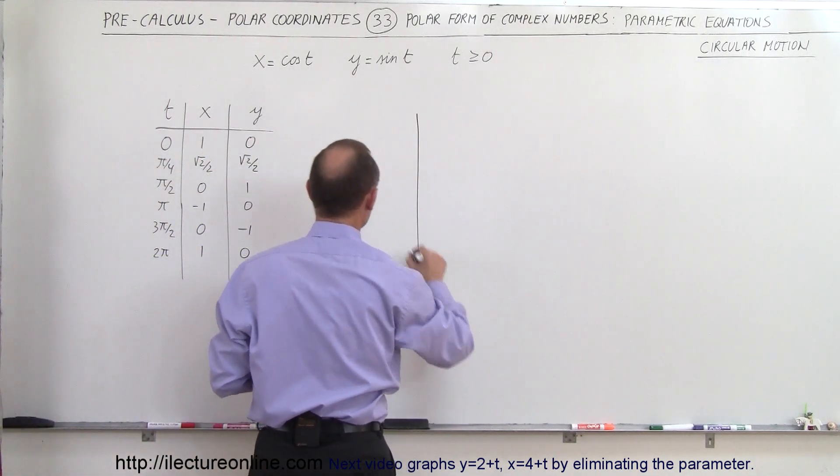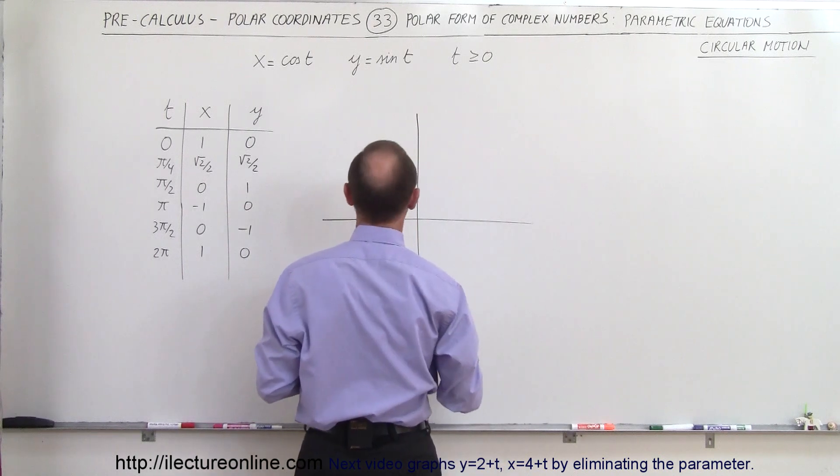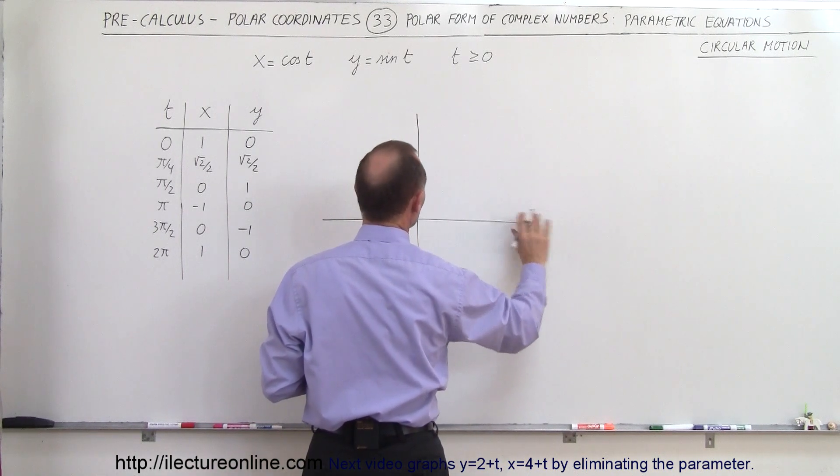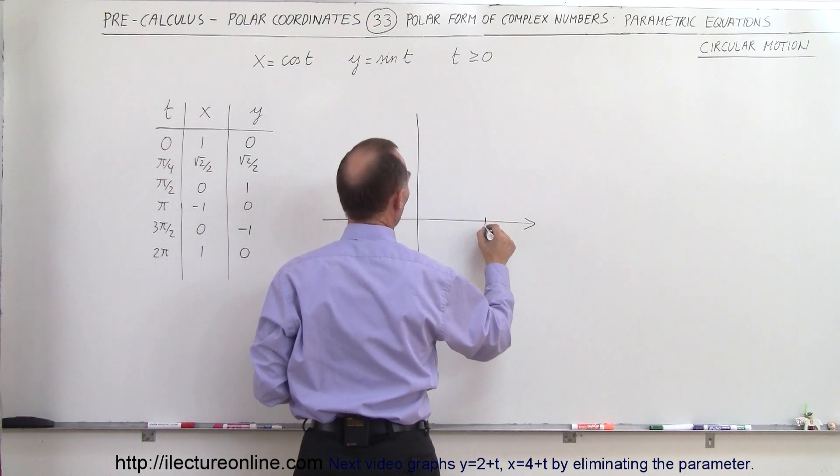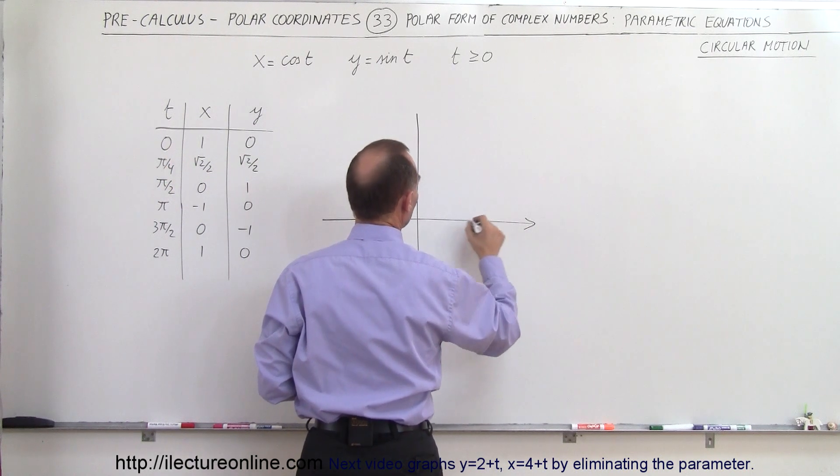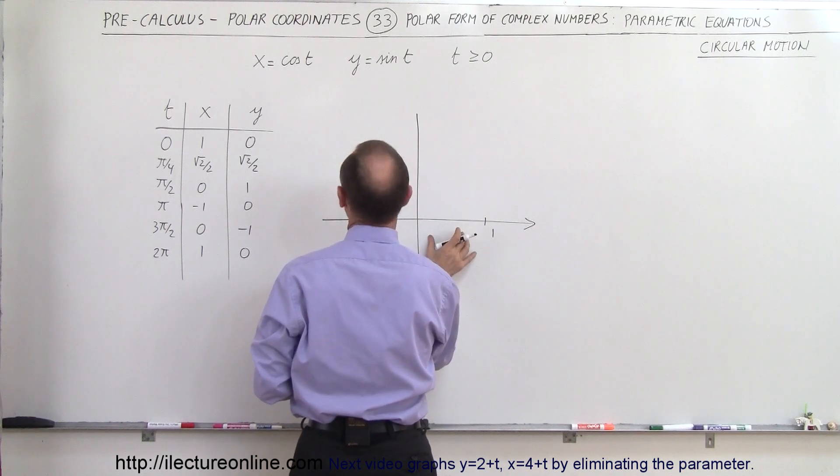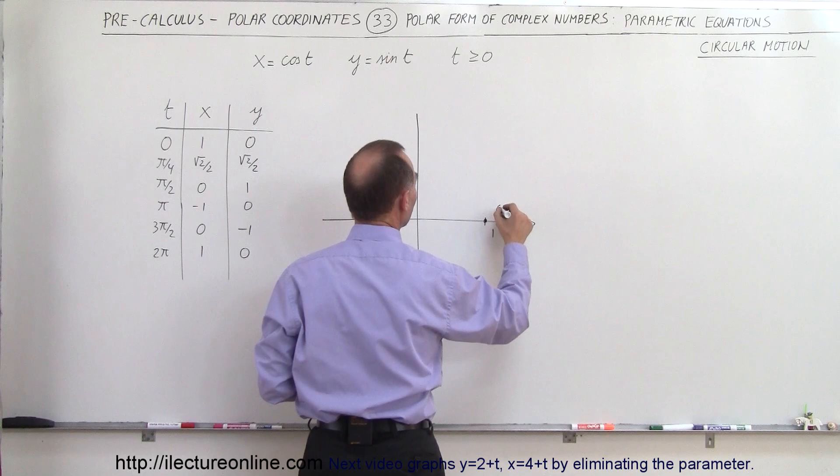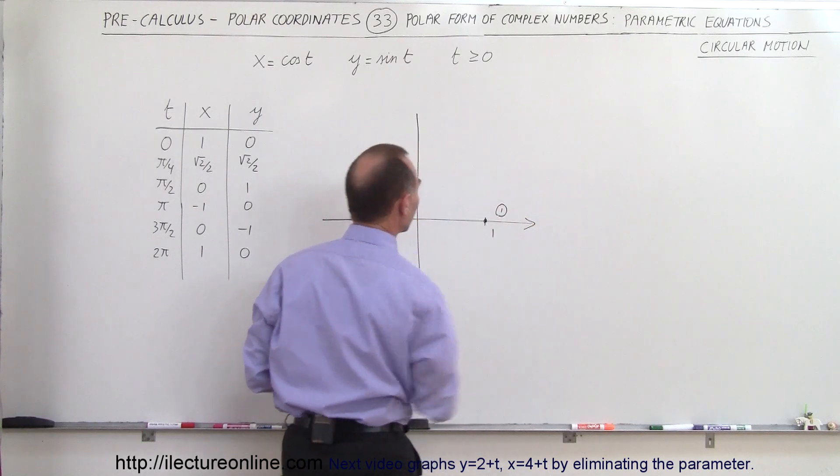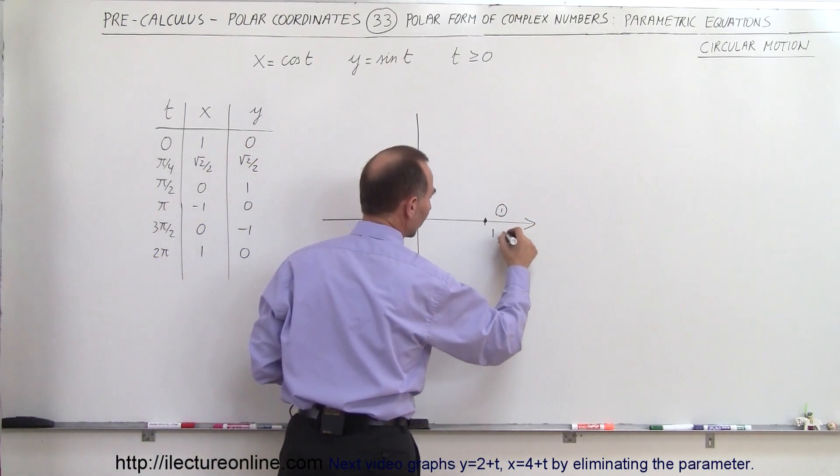What does that look like? We'll go ahead and draw this on a polar coordinate system. We have the horizontal axis. When t is equal to 0, x is 1, y is 0, so this would be 1 and 0. That means r is 1. That would be this point right there, and that would be point number 1, the point (1,0).